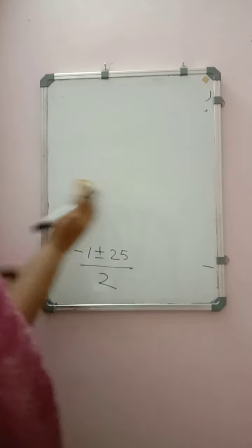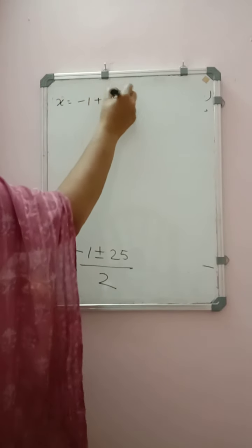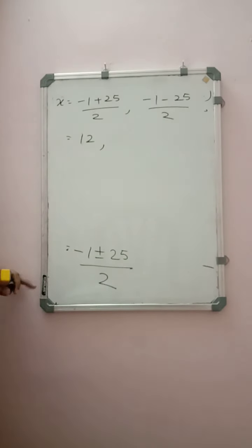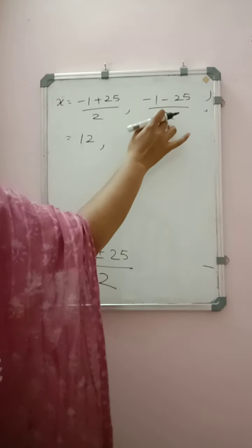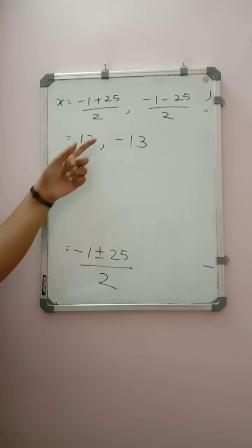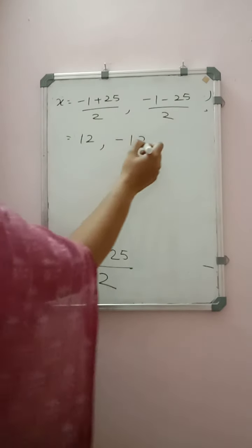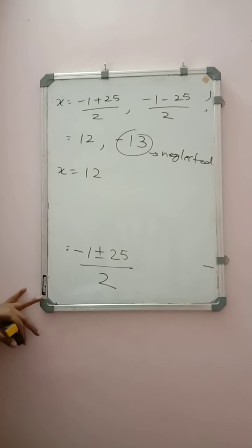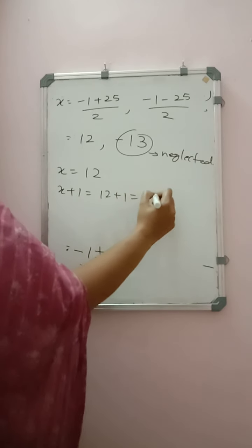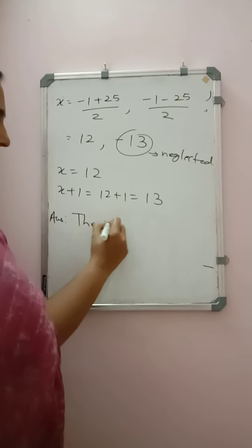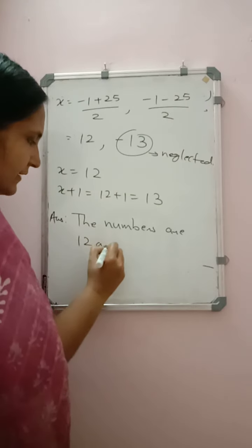x = (−1 + 25) / 2 or (−1 − 25) / 2. That gives 24/2 = 12, or −26/2 = −13. In the question it was written the numbers are natural numbers, so we neglect the negative value. Therefore x = 12, and the next number is x+1 = 13. In word problems always write an answer statement: the numbers are 12 and 13.